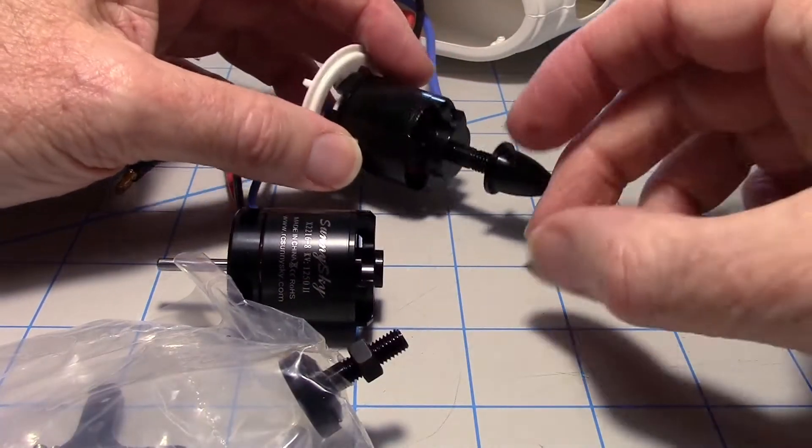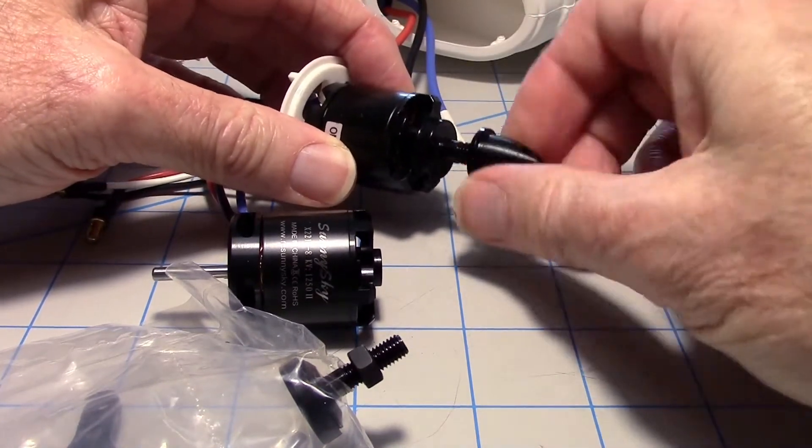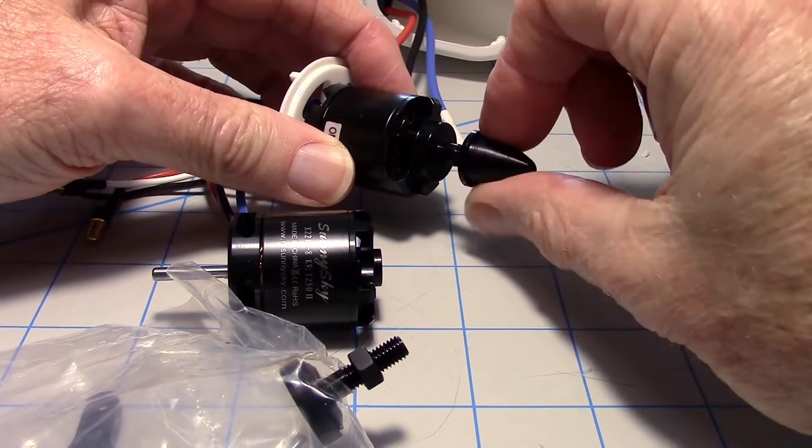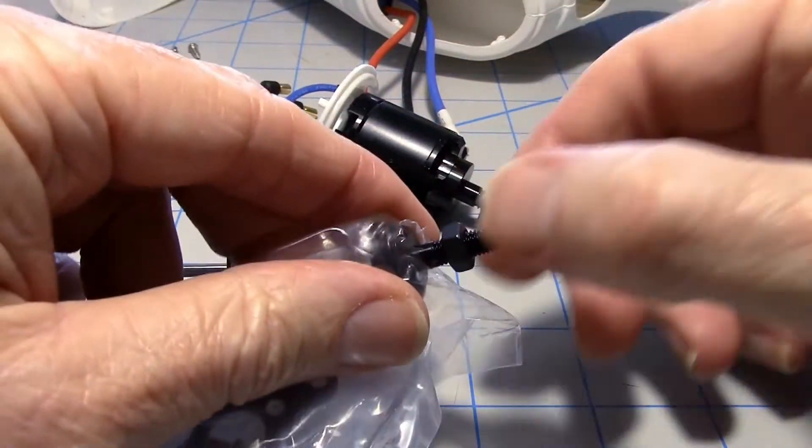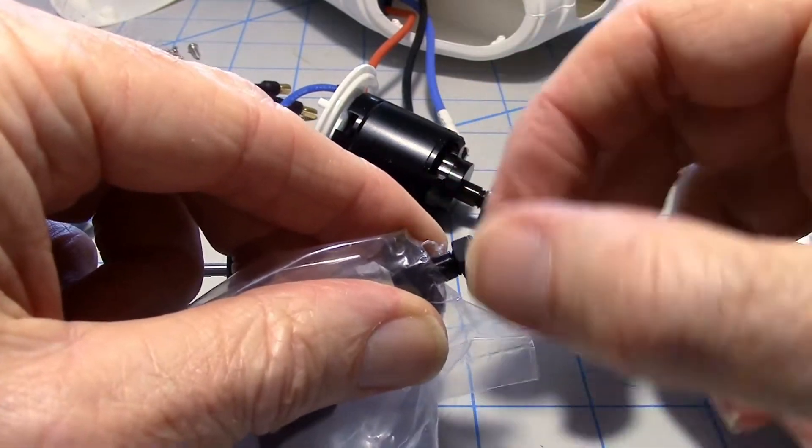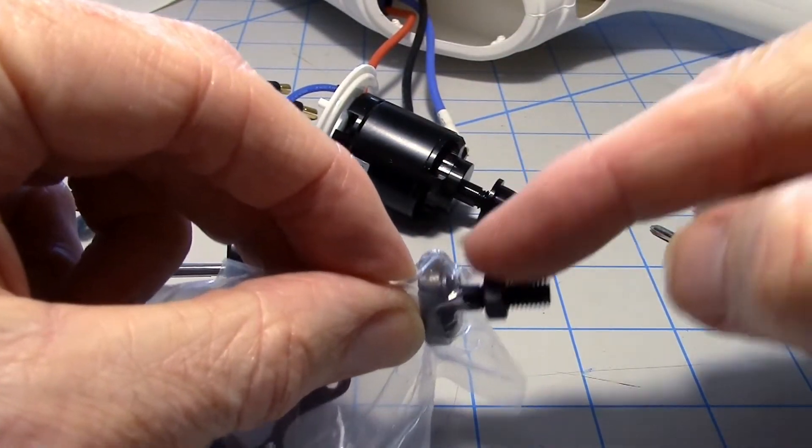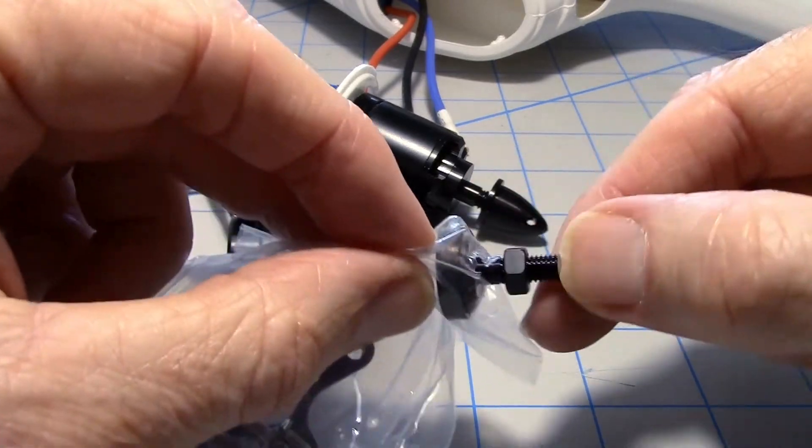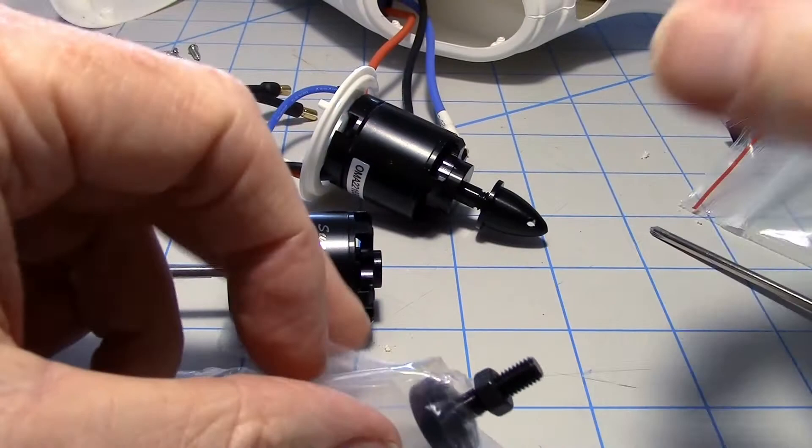One thing to make note of is the prop nut on the original motor actually is a reverse thread. So that's screwing it on going counterclockwise. The one that came with the SunnySky is a normal thread going clockwise. But I think I have another one of these adapters that will fit the SunnySky that is counterclockwise threads. So I'm going to go look for that.